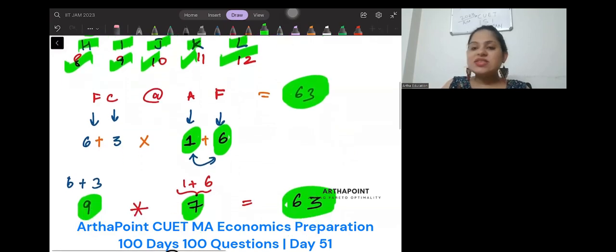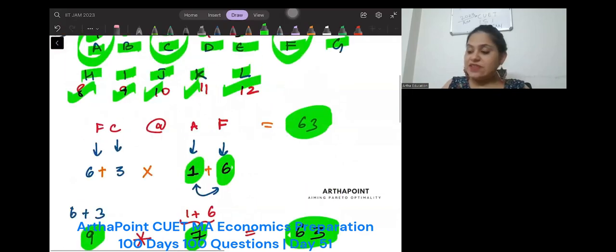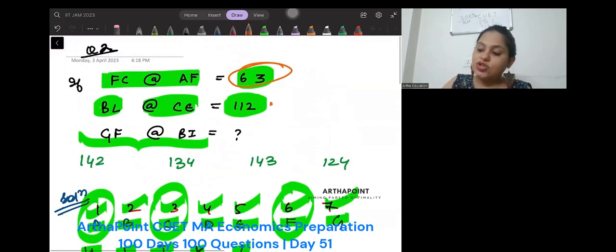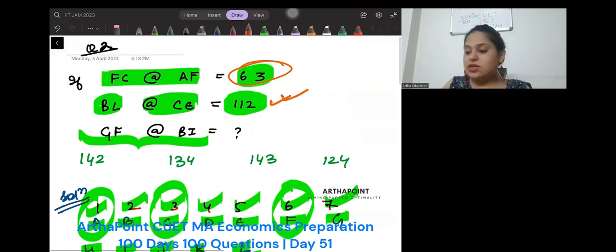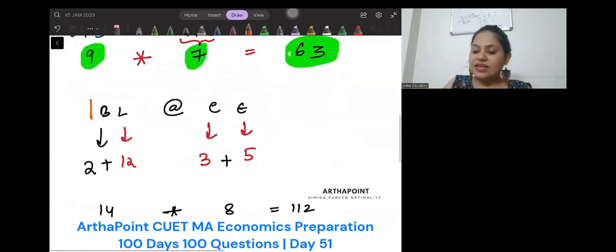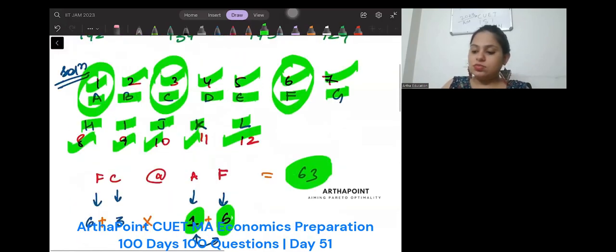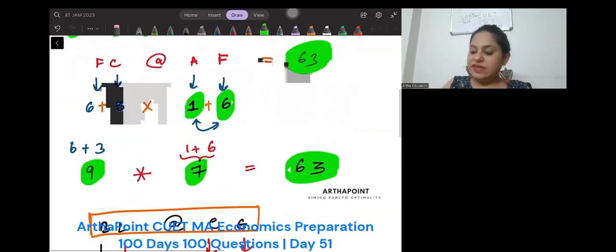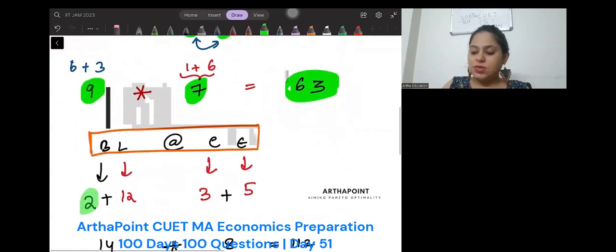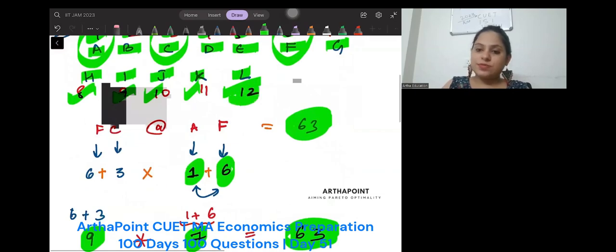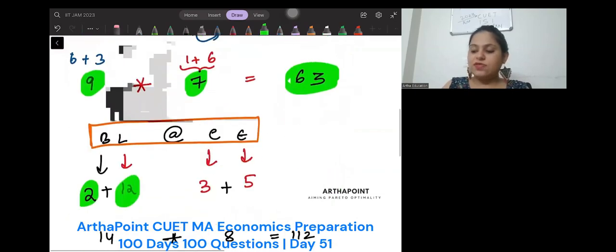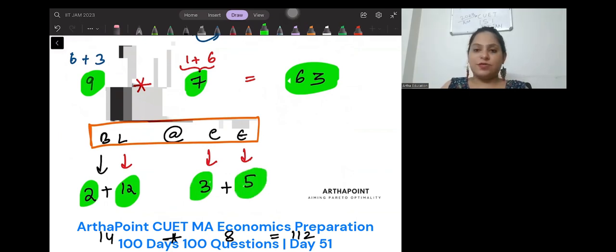On very similar analysis, let's see if it satisfies the other equation or not. So BL at the rate CE is 112. B will be given the number 2, L will be given 12, C will be given 3 and E will be given 5.